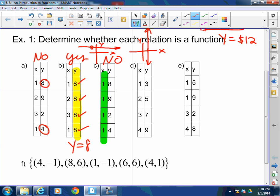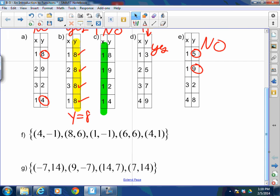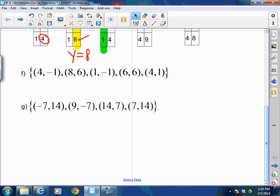How about d? Yes. No repeaters. How about e? No. When x is 1, y is 5. When x is 1, y is also 9. How about f? No. When x is 4, y is negative 1. When x is 4, y is 1. How about g? Yes. Very good. This is a good one. I put in very similar numbers, but there are no repeaters with different y's. Excellent.